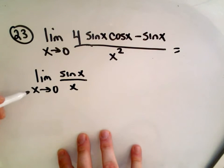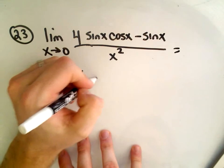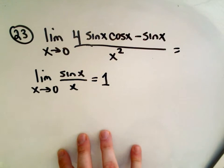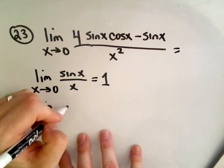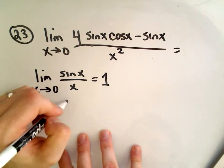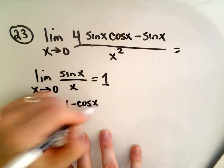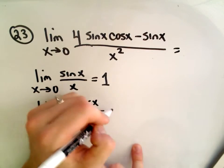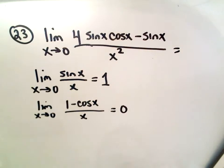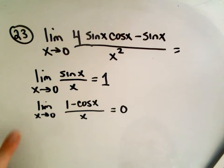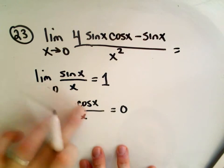The limit as x approaches 0 of sine x over x, this actually turns out to be 1. And the limit as x approaches 0 of 1 minus cosine x over x, this equals 0. So a couple useful little identities. We're actually going to use those in this case as well. So how are we going to use these?